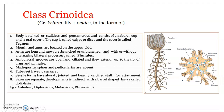The ambulacral grooves are open, ciliated, and serve to carry food to the mouth. Ciliary structures inside create a water current that brings food particles. The tube feet line the ambulacral grooves on either side and extend into the pinnules. With the aid of tube feet and mucus strands, crinoids collect small organisms from the surrounding waters.